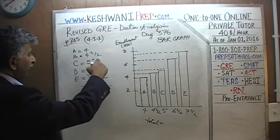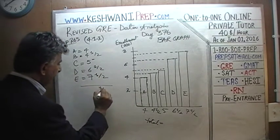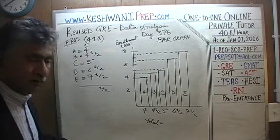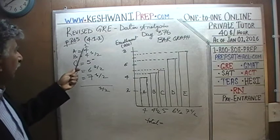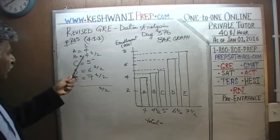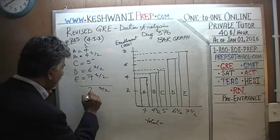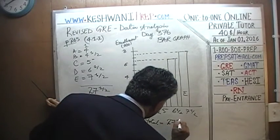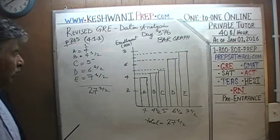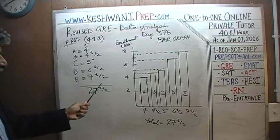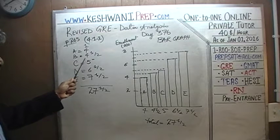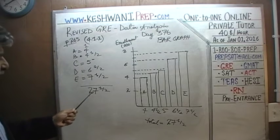Half plus half plus half is one and a half — write the half and carry one. Then: 1 plus 4 is 5, 5 plus 5 is 10, 4 plus 6 is 10, 10 plus 10 is 20, 20 plus 7 is 27. So the total is 27 and a half thousand students across all five colleges.